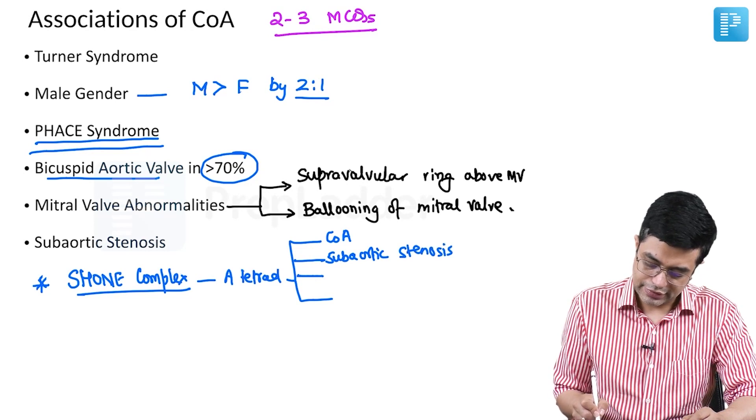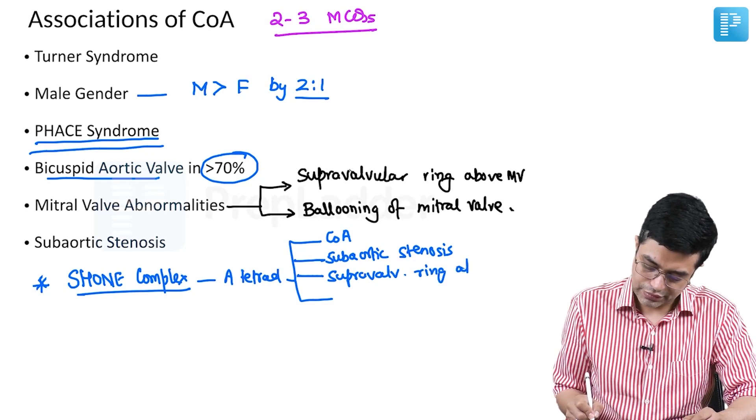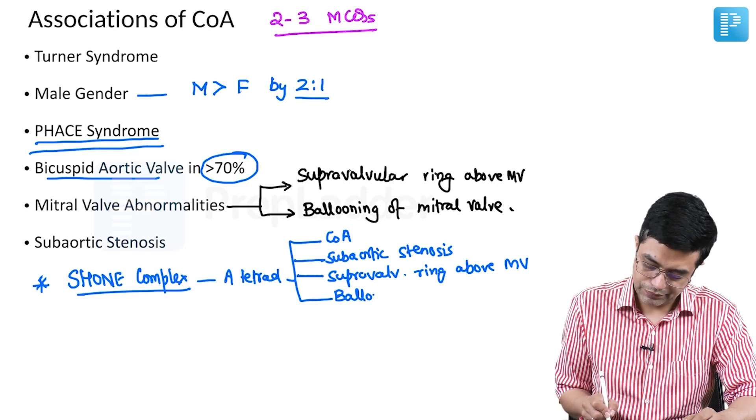Third is supravalvular ring above the mitral valve. And fourth is ballooning of the mitral valve.